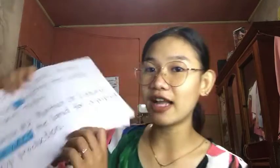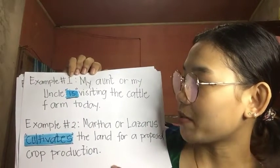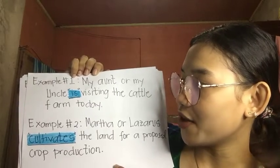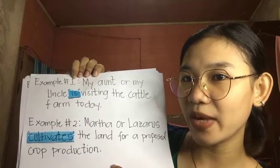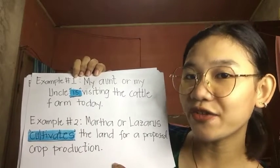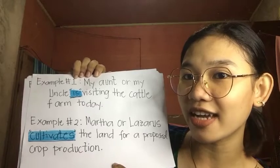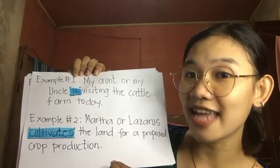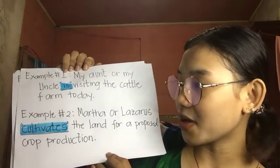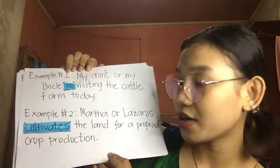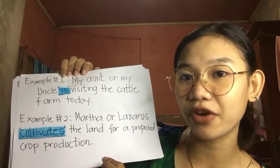Rule number one: two singular subjects connected by OR or NOR require a singular verb. For example, 'My aunt or my uncle is visiting the cattle farm today.' We have the linking verb 'is' because we are dealing with a singular subject. Second example: 'Marta or Lazaros cultivates the land for a proposed crop production.' A singular verb is one that has an S added to it in the present tense.